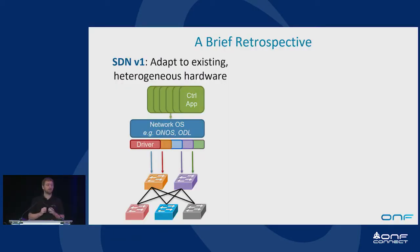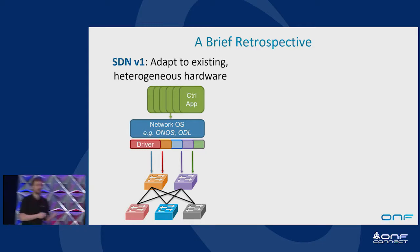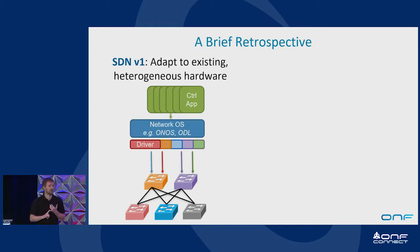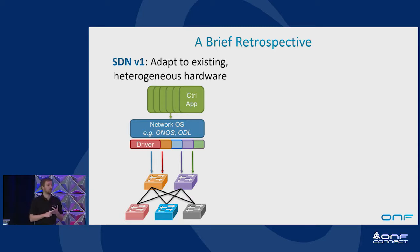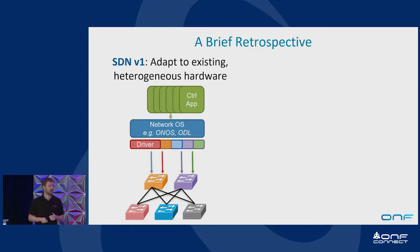So the first thing is just a brief retrospective. In SDN v1, we've primarily been responsible for building systems that adapt to existing heterogeneous hardware. What I mean is we're adapting to the models that come from device vendors, adapting to the pipelines of ASICs and switching chips on the device, adapting to the protocols on the device. A lot of the heavy lifting in SDN version 1 has been building these adapters, protocol layers, and drivers to present abstractions of a network and provide a global network view for control plane applications.